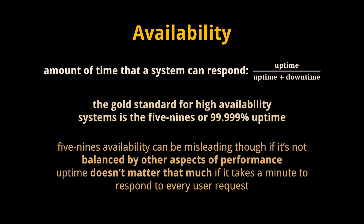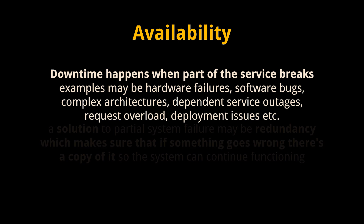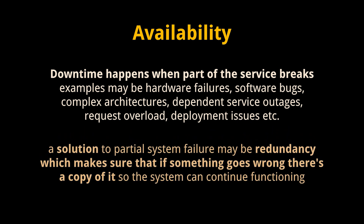It's important to make sure good latency and throughput are maintained while designing a highly available system. Downtime happens when part of the service breaks — examples include hardware failures, software bugs, complex architectures, dependent service outages, request overload, and deployment issues. A solution to partial system failure may be redundancy, which ensures that if something goes wrong, there's a copy of it so that the system can continue functioning.